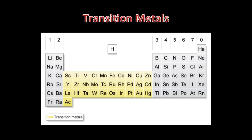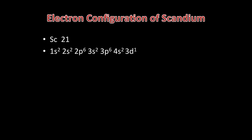When we come to the transition metals, as you go across period 4 from scandium to zinc, the 3D orbital fills. The 3D orbital has a higher energy level than 4S, which is why 4S fills before 3D. A D subshell can hold up to ten electrons in five orbitals. So if we write the electron configuration of scandium, which has 21 electrons, we start as we always do with 1S2, 2S2, 2P6, 3S2, 3P6, 4S2 and 3D1.